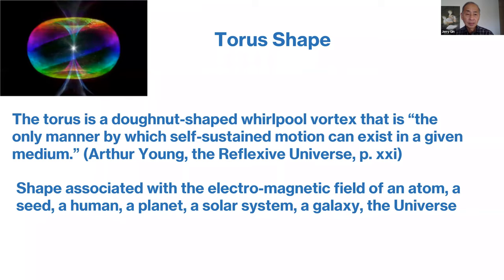To understand that, let's talk about the torus shape and structure. The torus is a donut-shaped whirlpool vortex. According to Arthur Young, that is the only manner by which self-sustained motion can exist in a given medium.